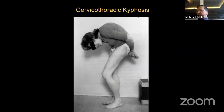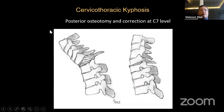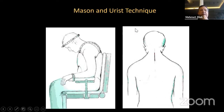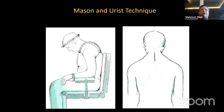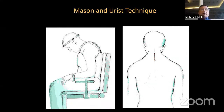What about cervicothoracic kyphosis? It may be done at C7 or T1 level. Mason and Urist were doing that type of surgery in a sitting position and under local anesthesia in the 1960s. After correction of the C7 osteotomy, they were providing correction with a traction device applied to the ceiling of the operating room. At that time, there were no good implants to hold the spine, so they were applying a whole-body cast to the patient.